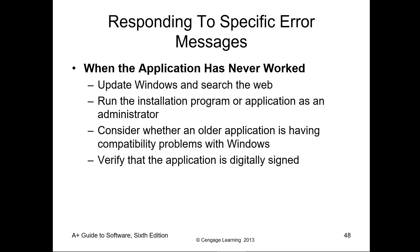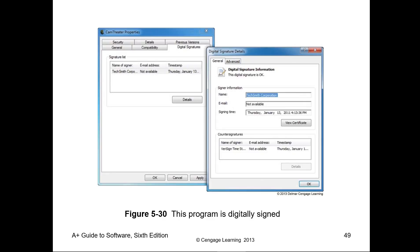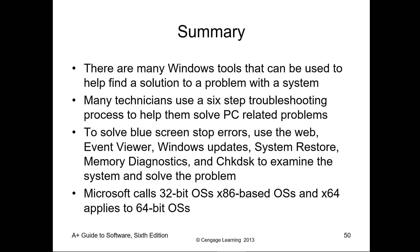When an application has never worked, think about using its compatibility settings. If you right-click on it and go to Properties, you have compatibility options — maybe run it as a different user or with different privileges, or check the digital signature to see if it's valid. Compatibility has lots of options, such as having it run as a program from Windows XP. That's it for this chapter — thanks and have a great day.